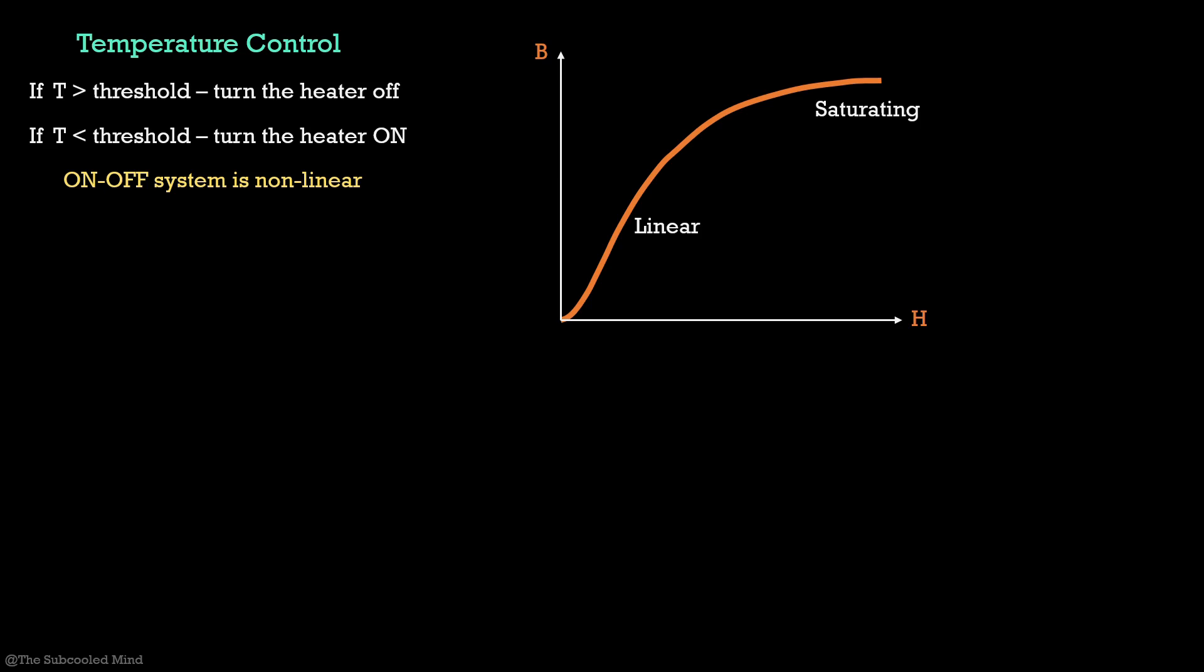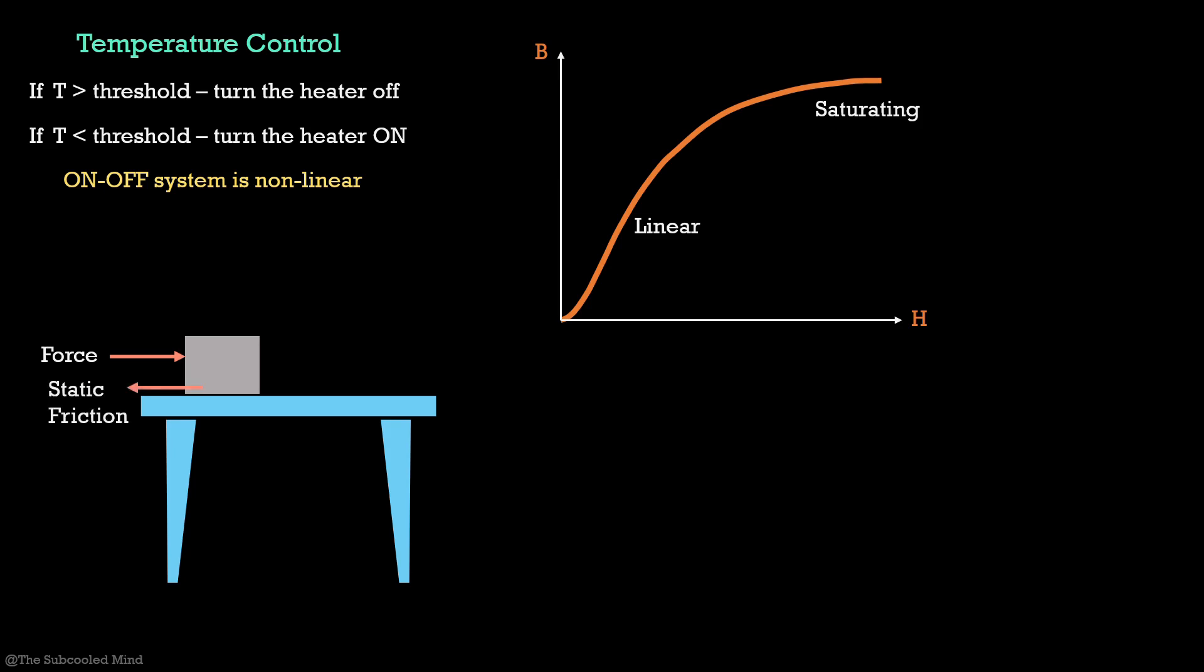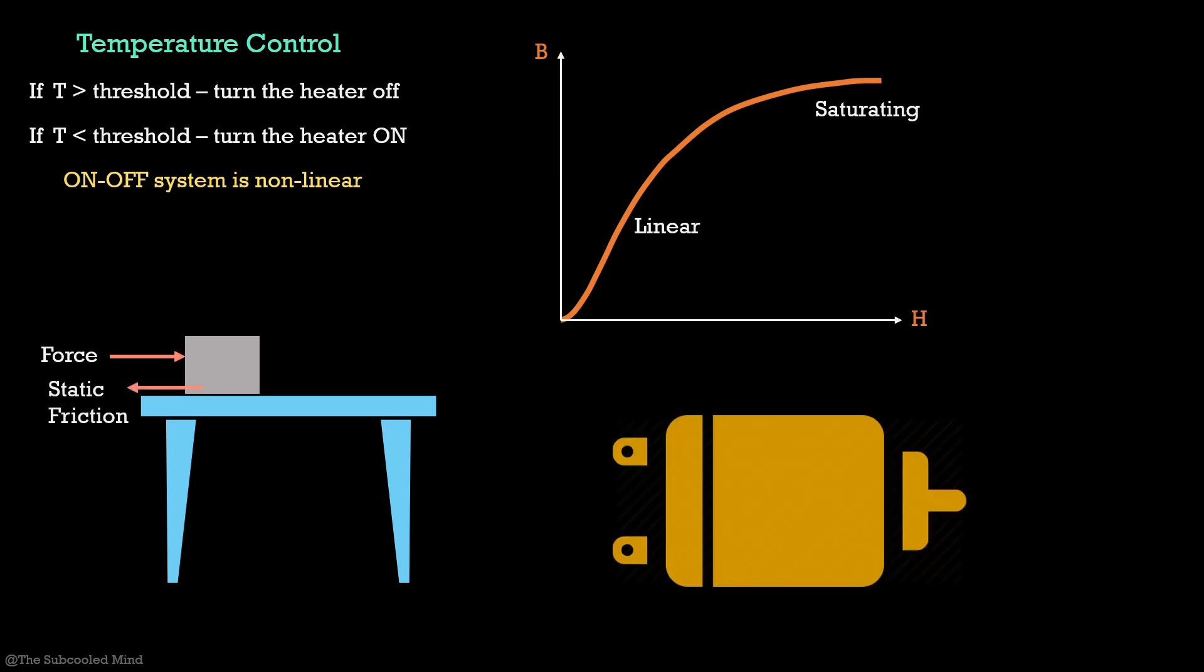But what about static friction? If there is a heavy box kept on a table and you apply a force on it, this box will not move unless a sufficient force is applied that exceeds the resistive force of the static friction. Now consider a big motor. You cannot rotate the shaft by the touch of your hand. You have to apply sufficient torque for the motor to move. This is the static friction and the cogging torque. So, you may never find a system that is completely linear. There will always be certain non-linearity which you have to take into account.